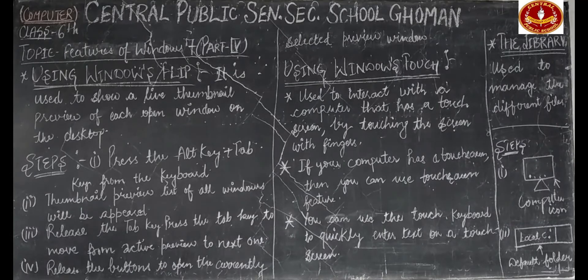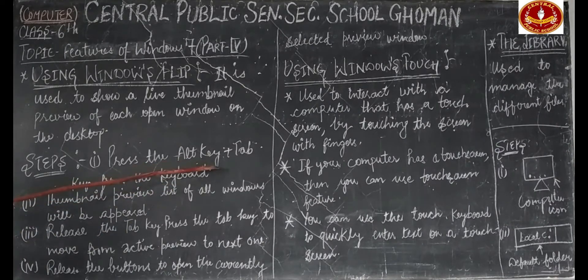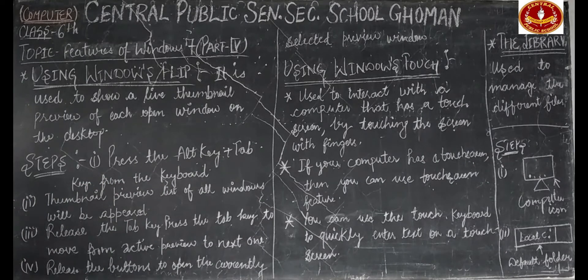First of all, we press the Alt key plus Tab on the keyboard at the same time. Then we press Alt and Tab. This will open a thumbnail preview list of all open windows.